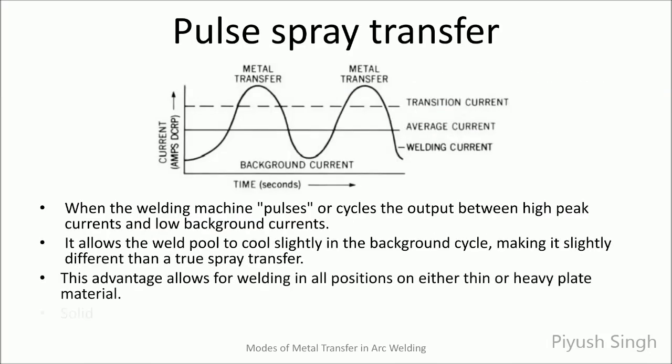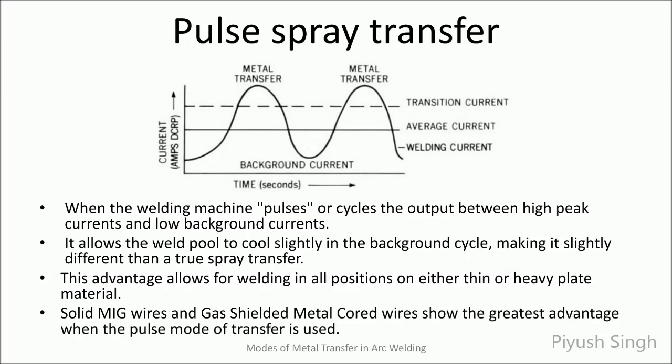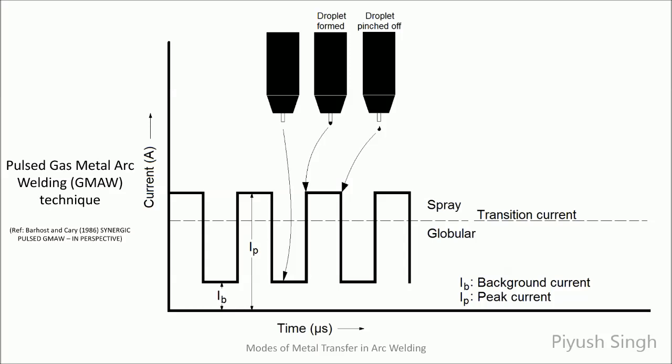In pulse spray mode of transfer, the power source supplies current that changes magnitude from a low background current to a high value called the peak current. This allows the average current to be at a low value, thus reducing the heat input during the weld. This allows the mode of transfer to be applied to all thicknesses of materials. Also, with this, advantageous spray transfer can be utilized in out-of-position welds. The pulse may not always be sinusoidal and can have different shapes like trapezoidal, square, or rectangular as shown here. As the current crosses a certain value called the transition current, the mode of transfer changes from globular to spray. As the current reaches peak current, the droplet is formed and pinched off by electromagnetic forces and then transported to the weld puddle.